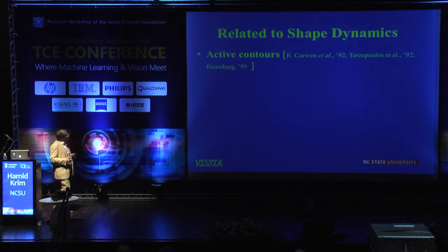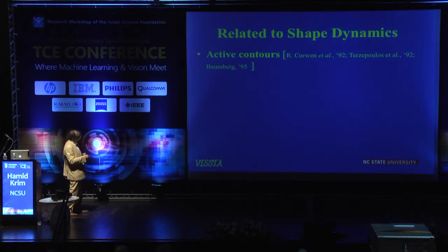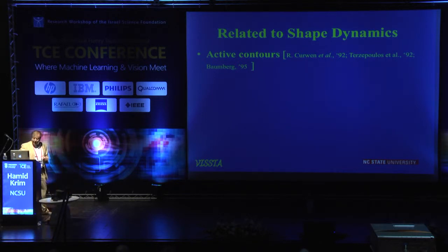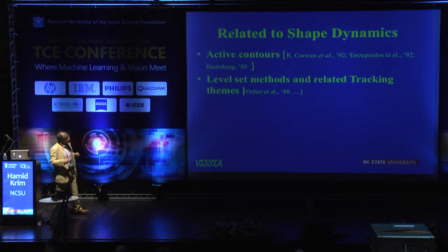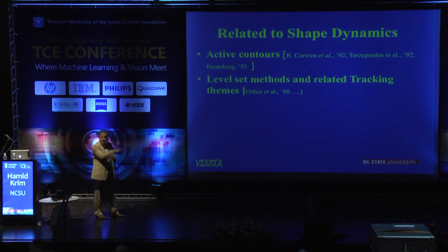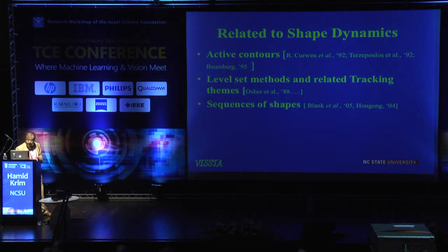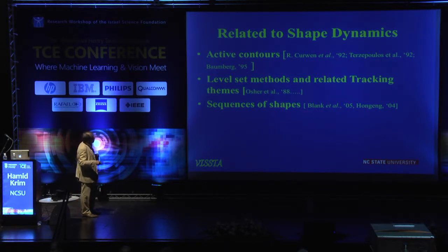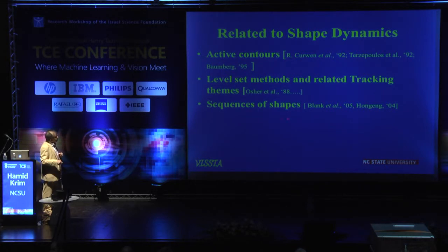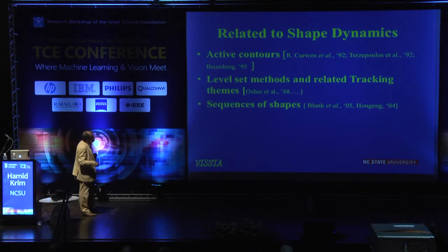How is that related to shape dynamics? The dynamics have been looked at also in the 2D arena, starting in the early '90s with active contours — Kirwan, Terzopoulos, et cetera — and then the level set methods, which was turned into an industry. I'll cite Osher for reference, and I also like to be alive when I leave here. Then sequences of shapes — this is more recent — and the Wiseman group had a very nice paper in 2005. In fact, they also provided the data for a lot of the analysis I will be describing.